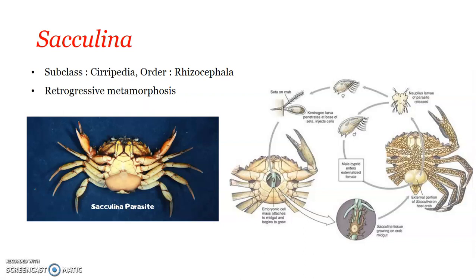Usually the metamorphosis we have learned about is progressive metamorphosis - for example, an egg giving rise to a caterpillar giving rise to an adult butterfly, or eggs hatching into tadpole larvae at various stages and then passing on to become a frog. In all these cases the larva has less advanced characters than the adult. But here, during metamorphosis, the larva with arthropod characters loses all the arthropod characters and becomes a degenerate adult. Such a type of metamorphosis is known as retrogressive metamorphosis, which is unique to very few species, one of them being Sacculina.